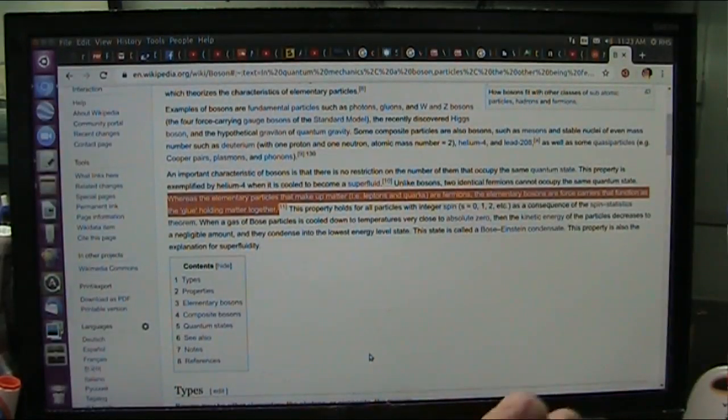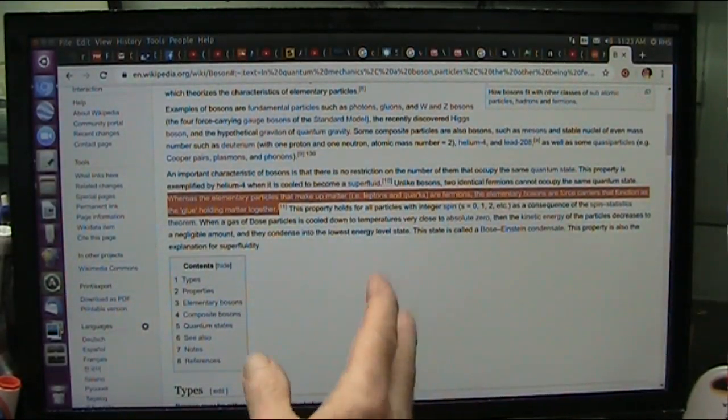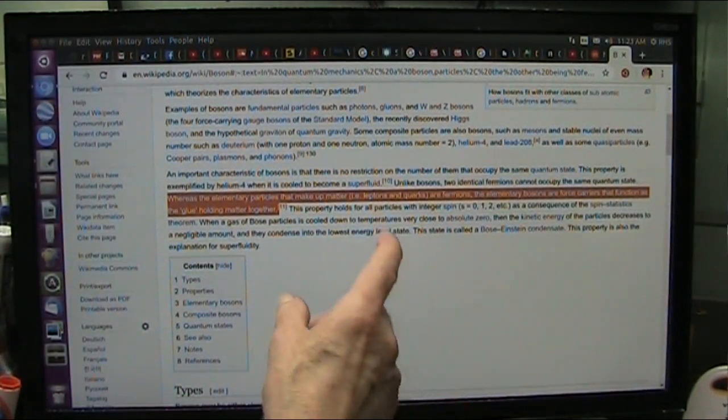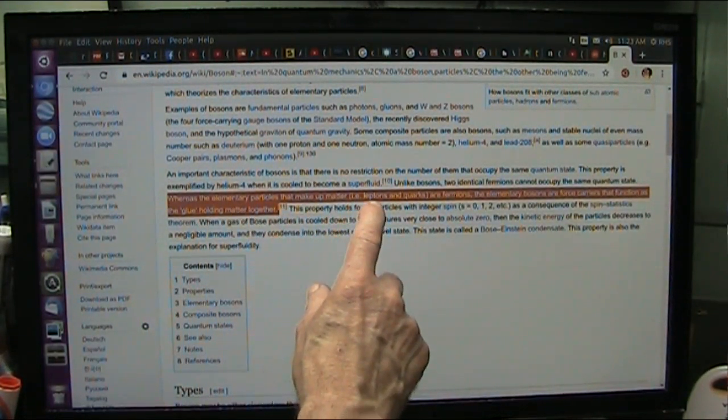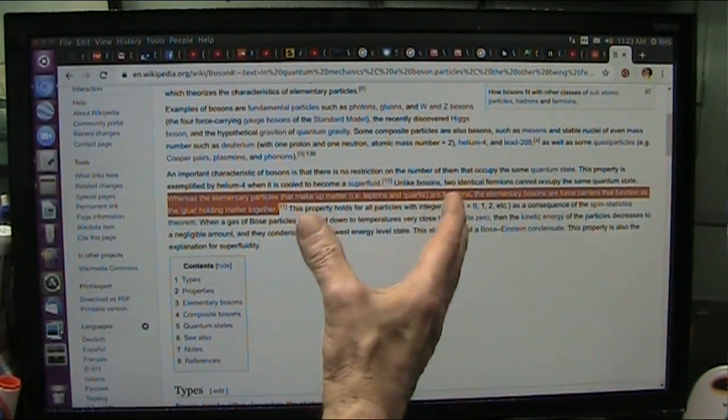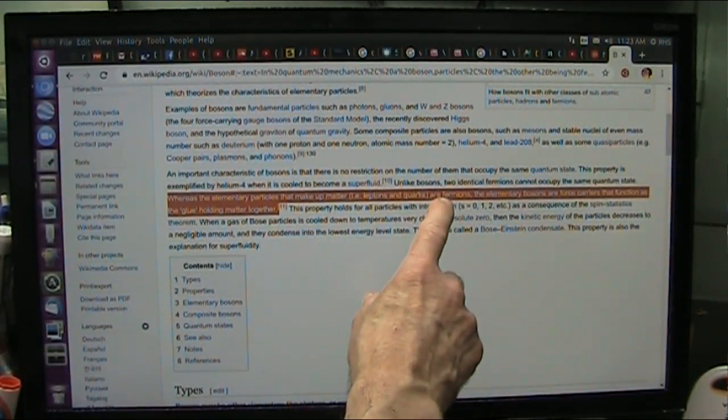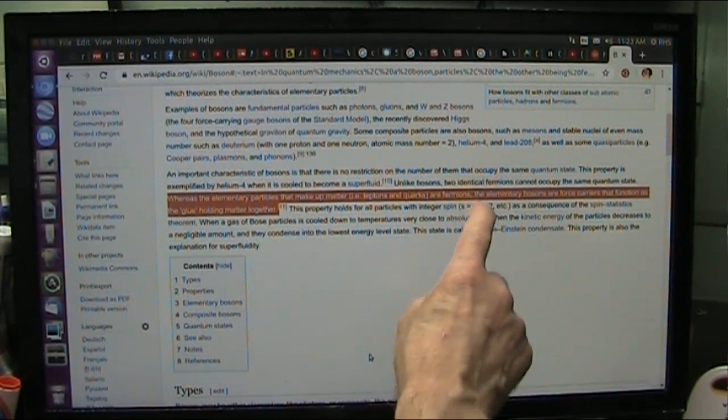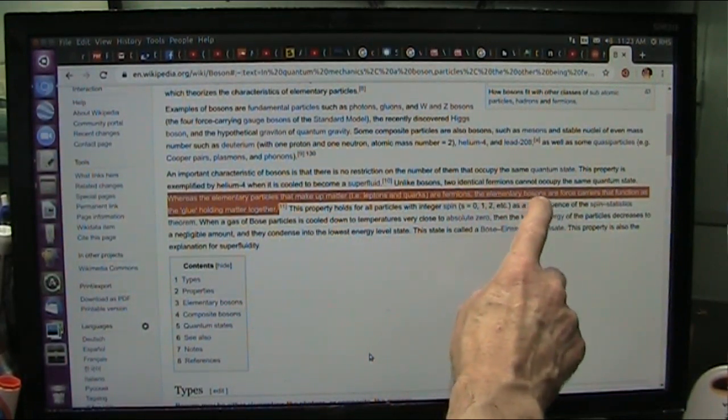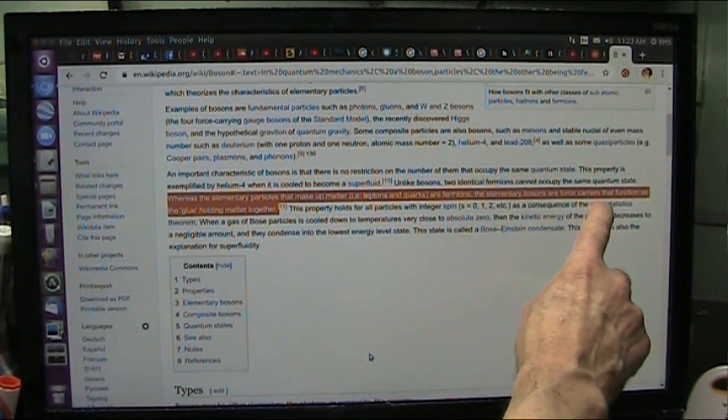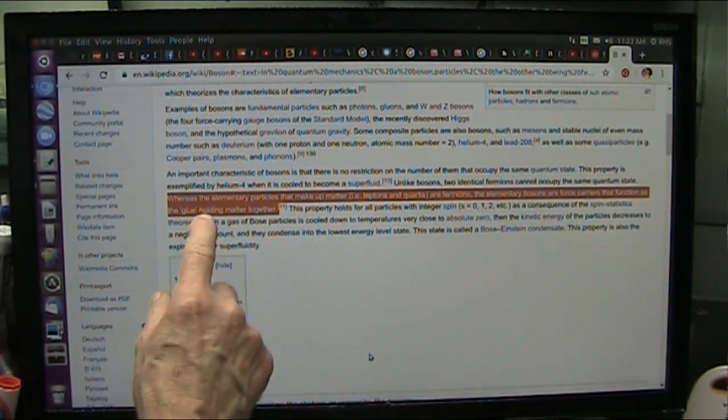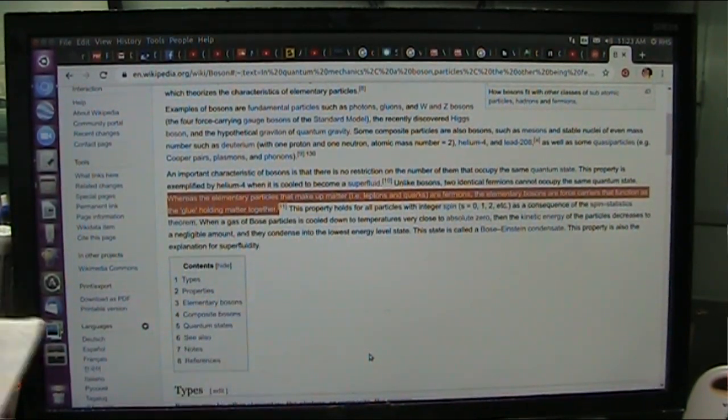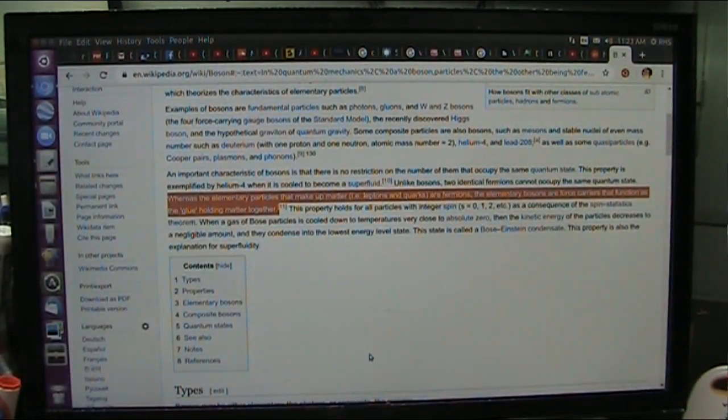Okay, I'm going to tell you exactly what they say in current physics, is that the elementary particles that make up matter are leptons and quarks, which are the explosive parts. They're fermions. They explode. The elementary bosons are force carriers that function as the glue, holding matter together. Well, I can show you that glue.